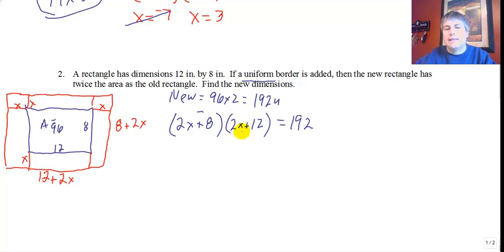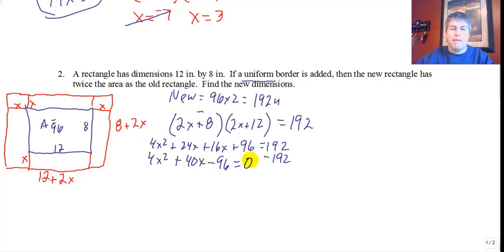I want to solve for x. I need to get this into standard form. So I will need to FOIL this all together. 2x times 2x, so 4x squared plus 24x plus 16x plus 8 times 12 is 96 equals 192. So I get 4x squared plus 40x, I'm going to subtract 192 from both sides and I get minus 96 equals 0.